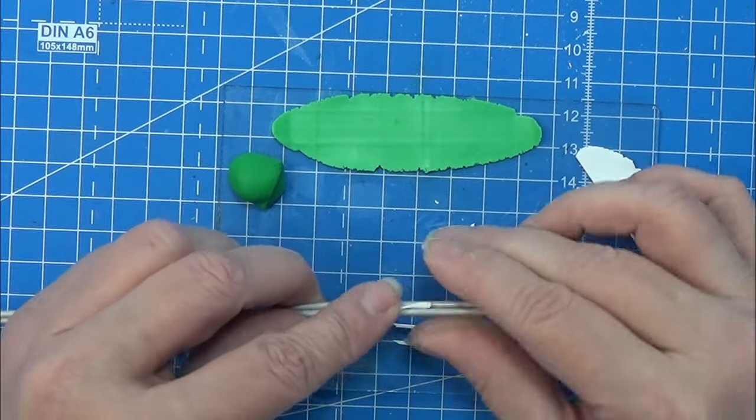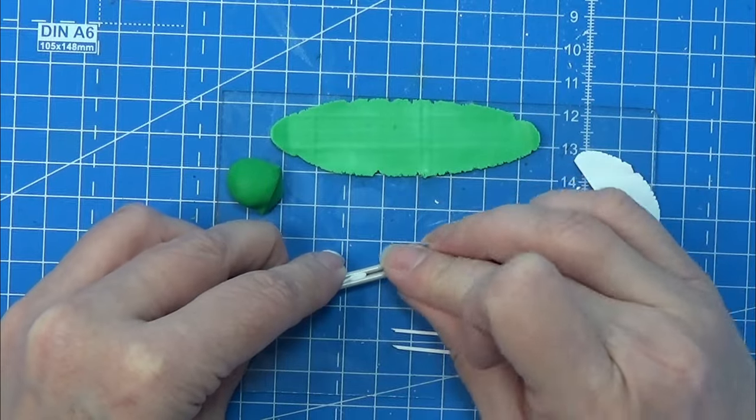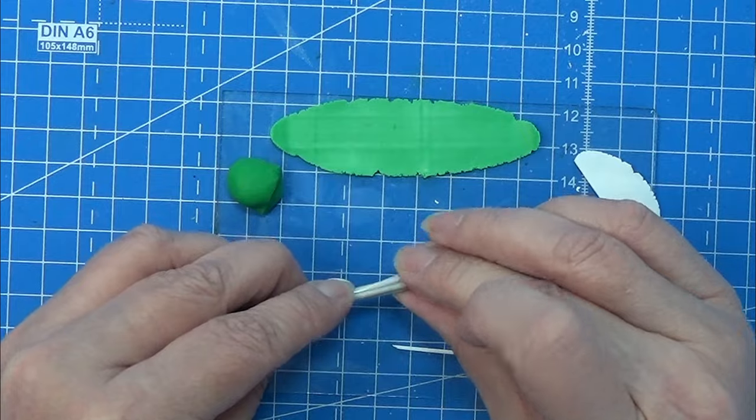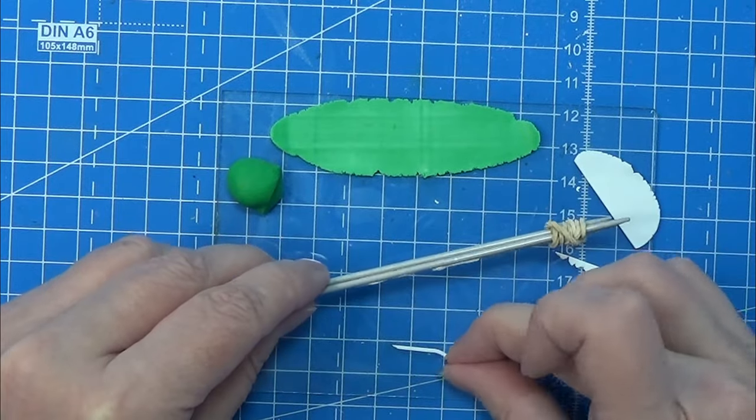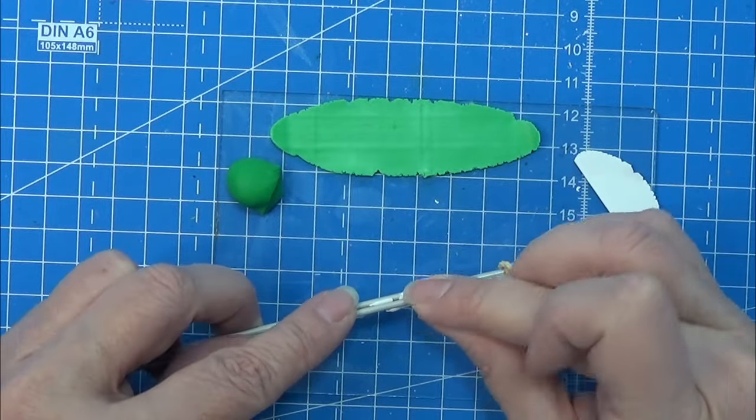I am placing some of these small strips between the knitting needles here in these divots just here and there. I don't want too much in there and I don't want too little in there, so I'm just placing them.